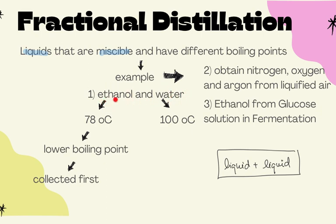The two miscible liquids must also have a difference in their boiling points. Ethanol has a lower boiling point of 78°C, so it will be collected first. The second collection point is at 100°C, the boiling point of water. Fractional distillation can also be used to obtain nitrogen and oxygen from liquid air, and to get ethanol from the fermentation of glucose solution.